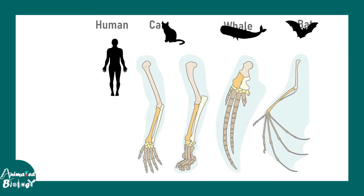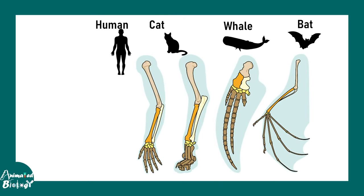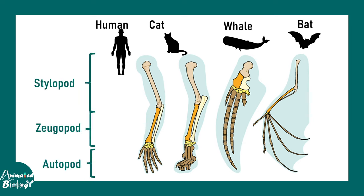Now, be it the hand of a human, leg of a cat, flipper of a whale, or the wing of a bat — all of that has a basic architecture which is defined by stylopod, zygopod, and autopod. The stylopod is basically the femur and the humerus. The zygopod comprises the fibula, tibia, radius, and ulna. The autopod comprises the tarsals, carpals, and all the phalanges.